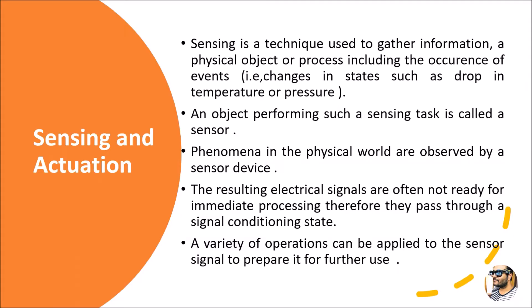First, let us define what is a sensing mechanism. Sensing is a technique used to gather information from a physical object or a process, including the occurrence of events.